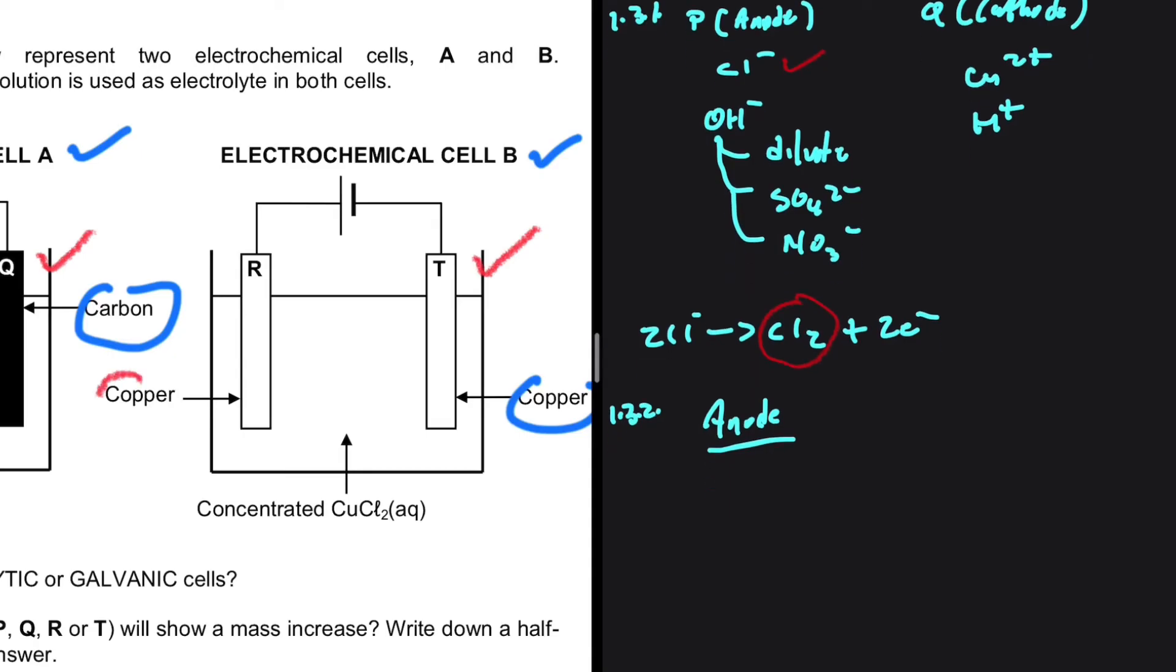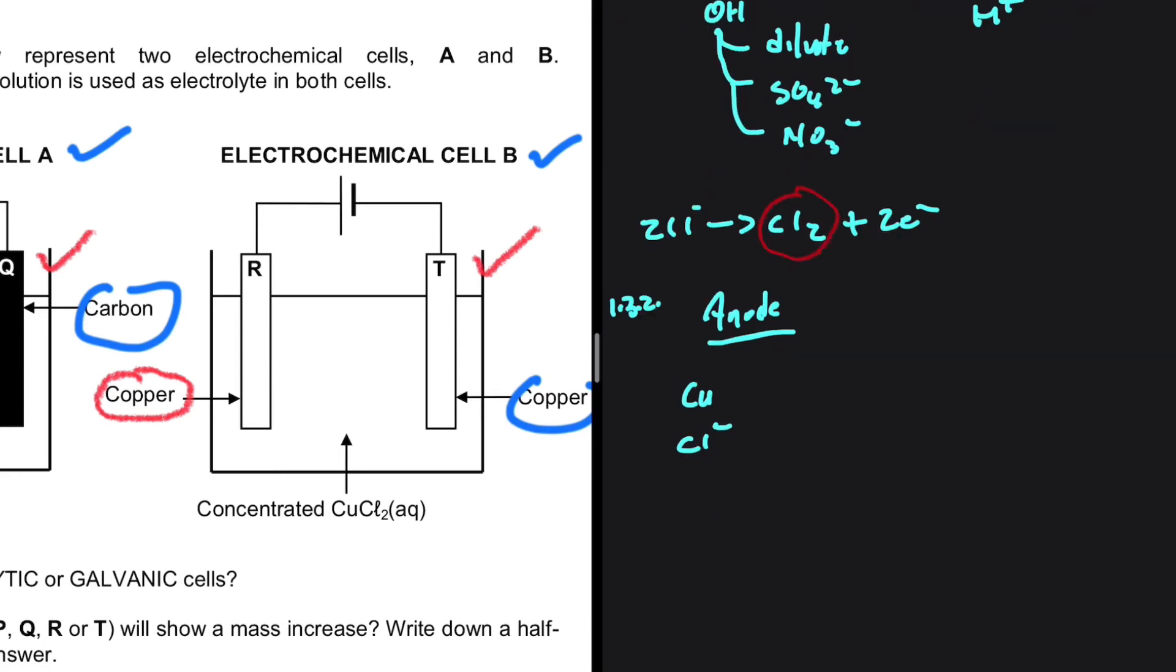At the anode, we have copper as our electrode. So the species we're going to have is going to be copper, Cl minus, and OH minus. The question really here is between copper and Cl minus, what gets oxidized?